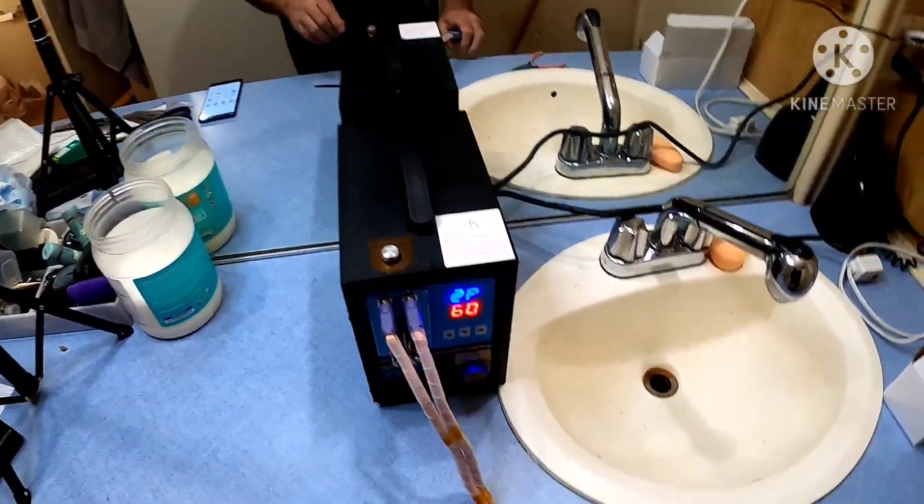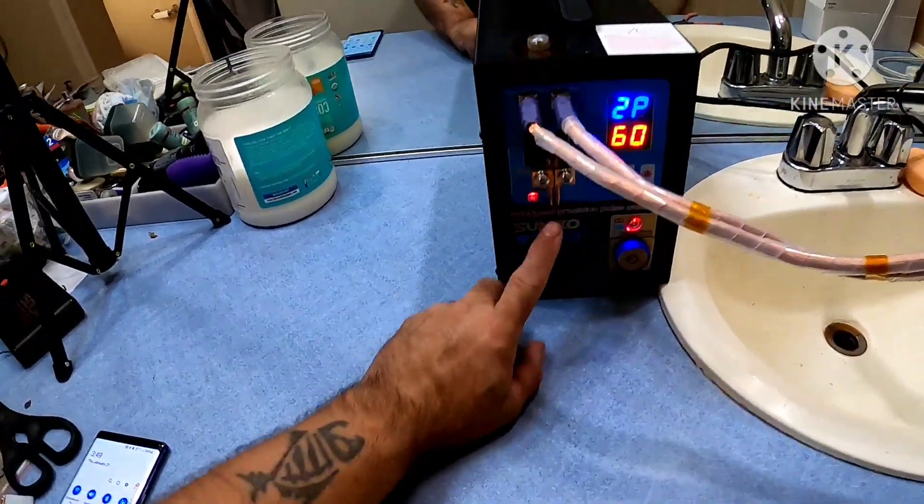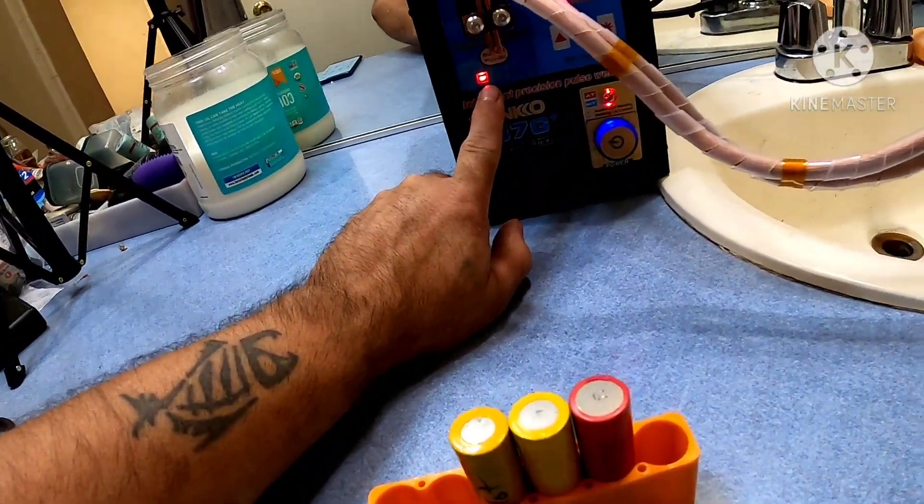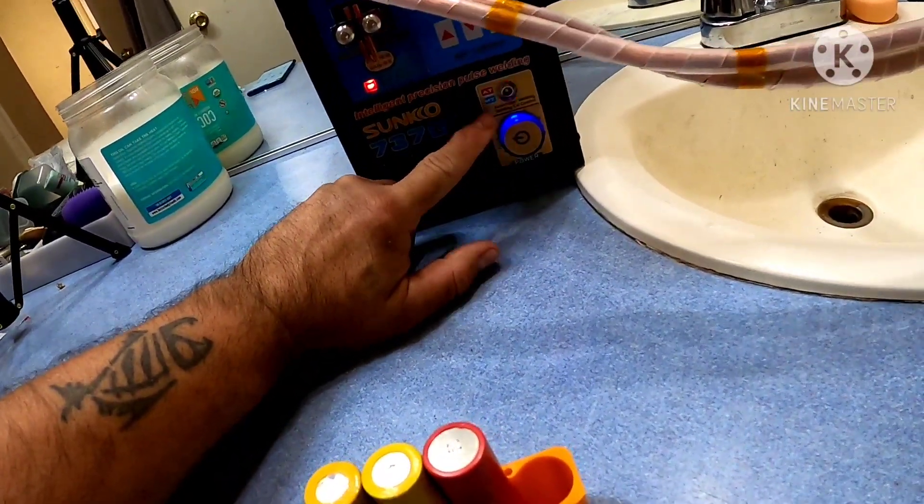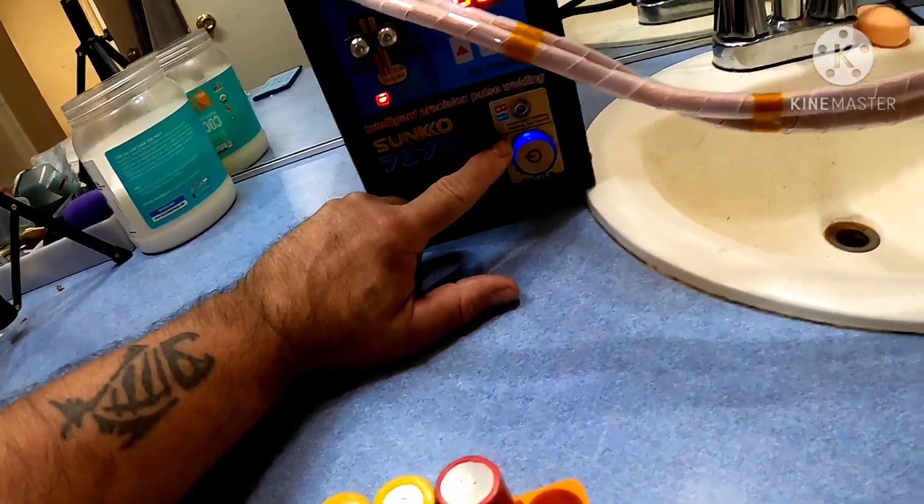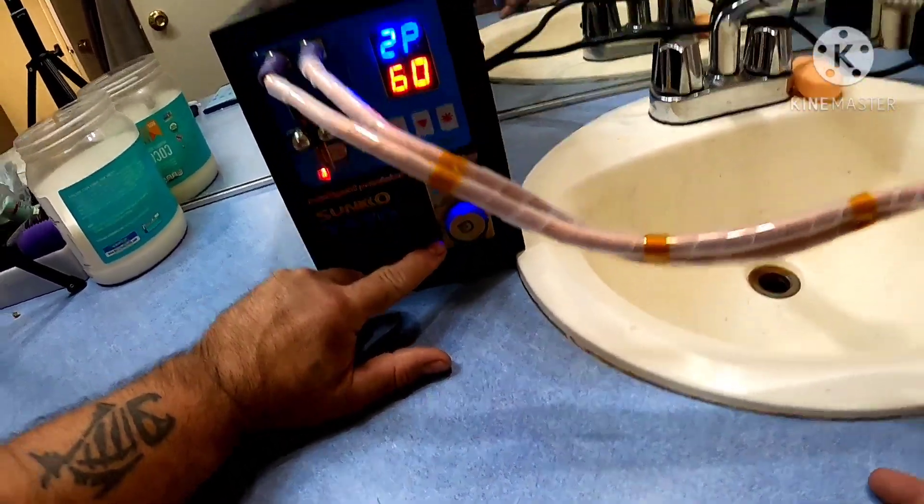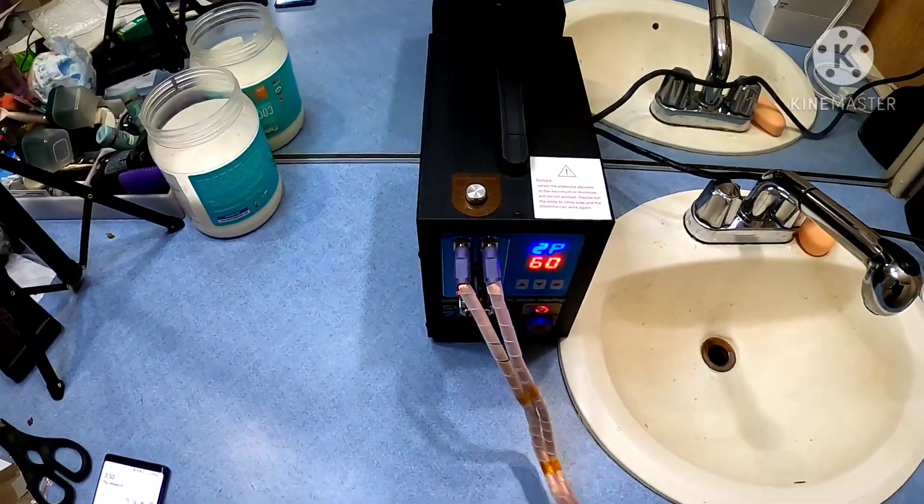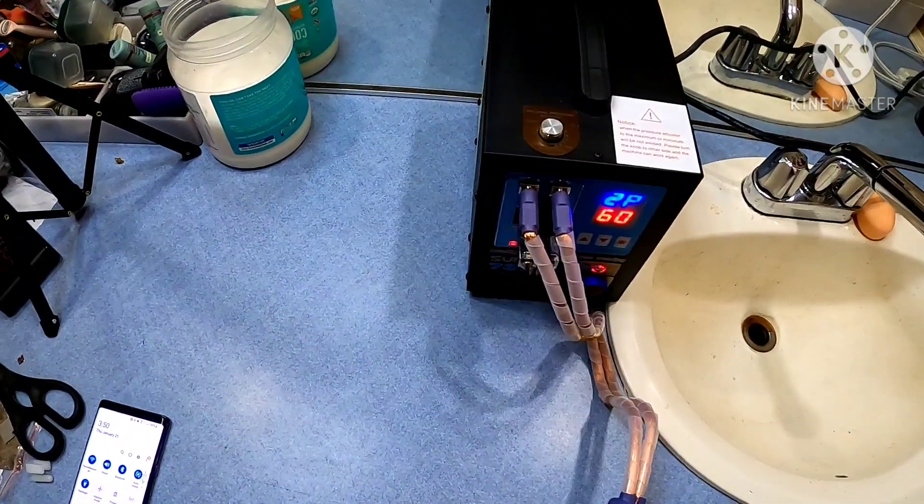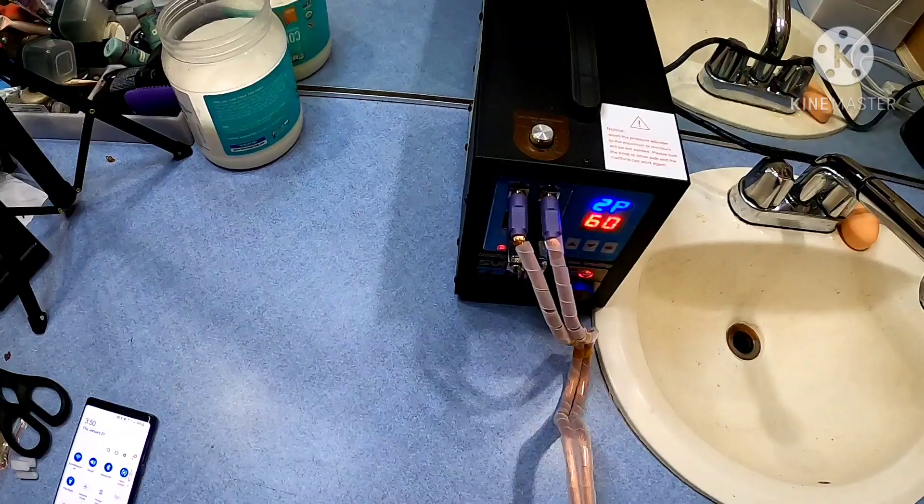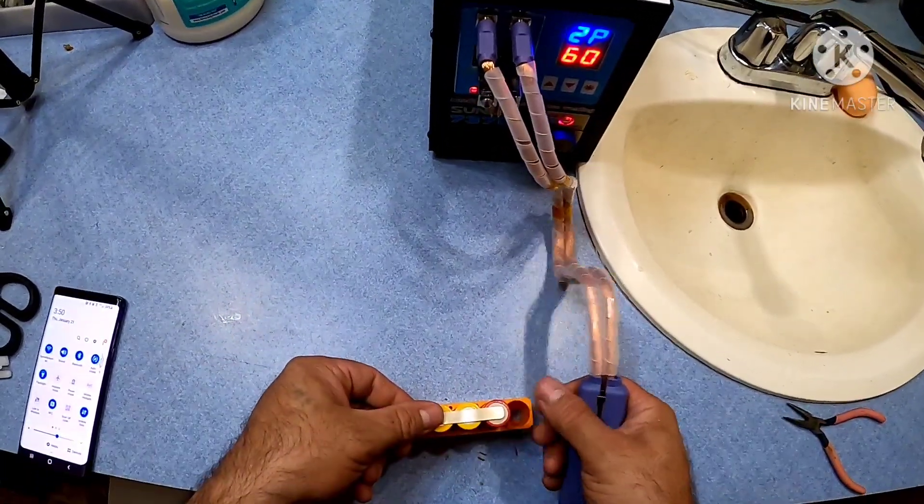I think I got it dialed in. Pulse 260, and then down here put this on 8, and then this knob here, which is the auto trigger weld, is at a little bit over 2.5. I think I've got it pretty decent. Let's see if I can get some on here.